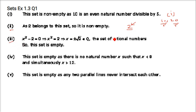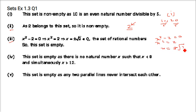Next is x such that x² − 2 = 0 and x is rational. The equation x² − 2 = 0 means x² = 2, so x = ±√2. But ±√2 is an irrational number, and the question requires a rational number, so this set will be an empty set.